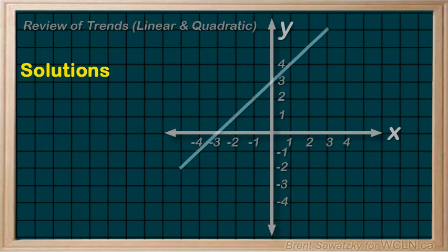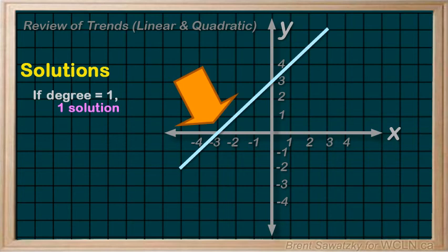Thus, a linear relationship, that is degree 1, will always have one solution. That is, it crosses the x-axis once.